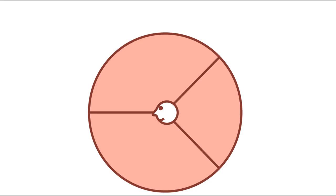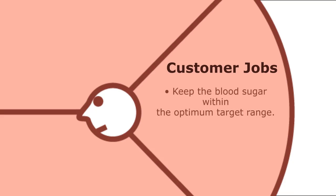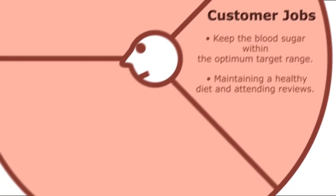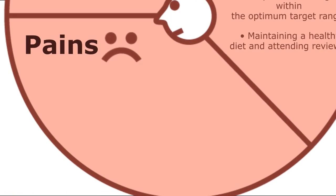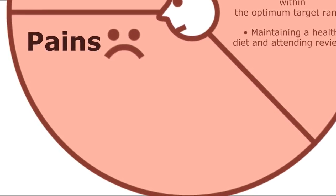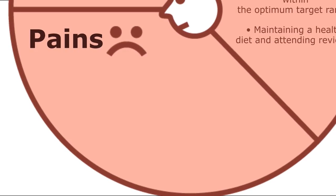Let's firstly look at the customer profile. Customer jobs describes a key job your customer is trying to get done. In this example, for someone with diabetes, the main priority for the patient and carer is to keep blood sugar within the optimum target range, maintaining a healthy diet and attending reviews. Let's move to customer pains. Customer pains are the activities or incidents that have potential to create a poor experience for the service user and negative clinical outcomes.